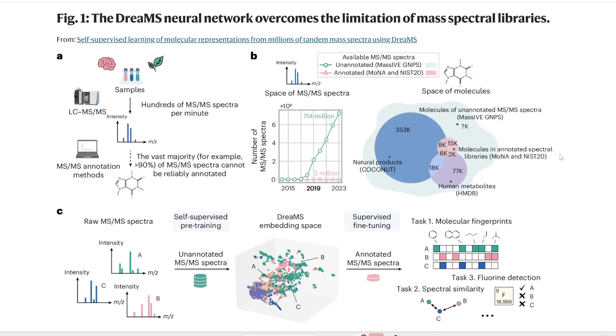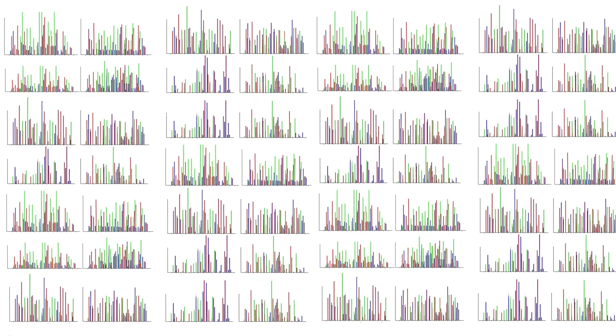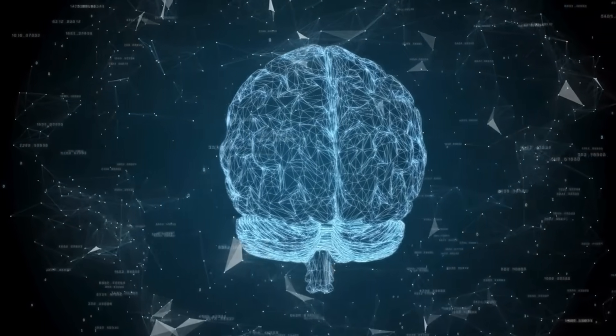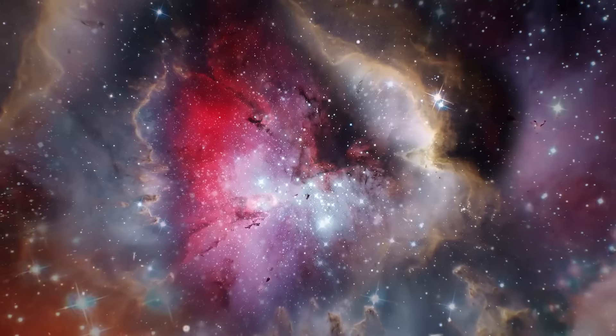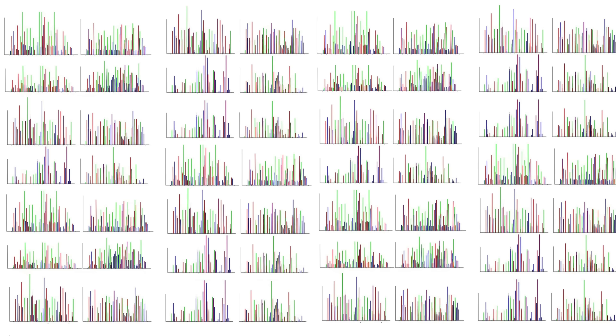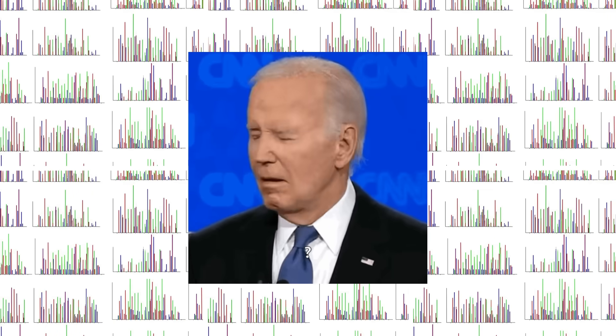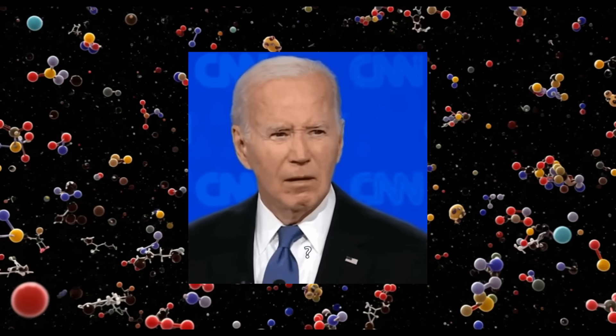So in this paper, the researchers used a new AI approach called the Dreams Neural Network to figure this out. The idea is to use all this data that we couldn't read before and train an AI to finally start mapping this hidden chemical universe and hopefully uncover some secrets. Like I said a moment ago, the problem isn't a lack of data. We have a ton of these spectra already. In fact, hundreds of millions of these molecular fingerprints from all the natural materials out there. We just don't know how to interpret this or figure out the molecular structure behind it.